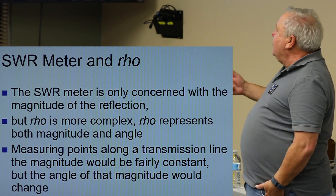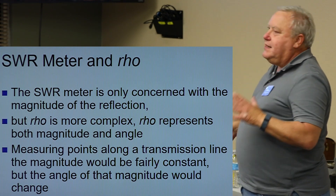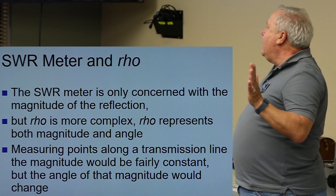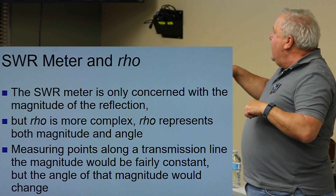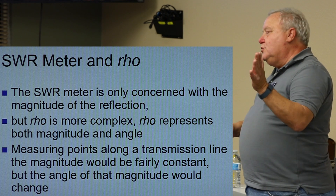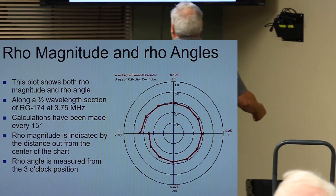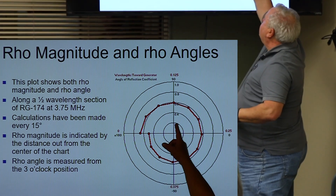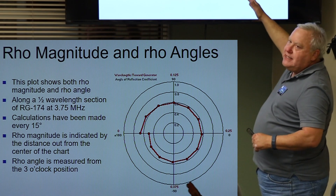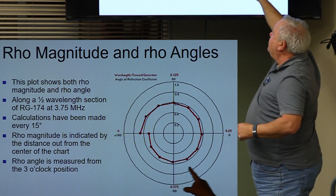So while an SWR meter only concerns itself with the magnitude of the reflected signal, rho is more complex because it also deals with an angle. You have both the magnitude and the angle of the information coming back. Measuring points along the transmission line, the magnitude would be fairly constant, but the angle of that magnitude would change. So at different positions we're going to have different angles. Here I'm showing both the rho — the reflected coefficient — and the rho angle: minus 90, plus 90, zero, 180. They basically took calculations every 15 degrees, indicated by distance from the center.